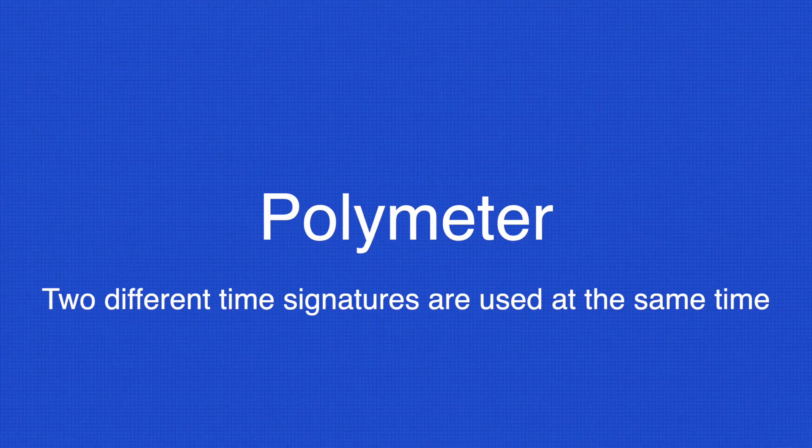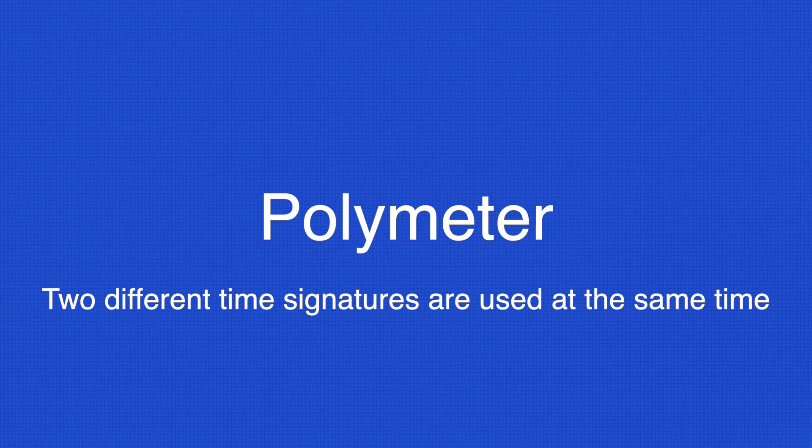Polymeter is a bit more complex than polyrhythm. Again, polymeter is where two different time signatures, or meters, are used, and desynchronization happens.